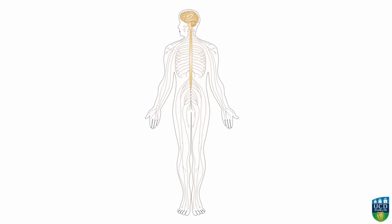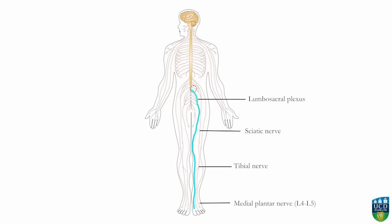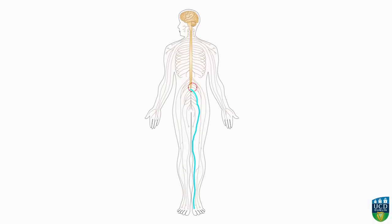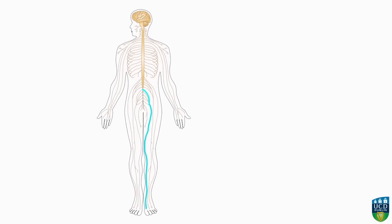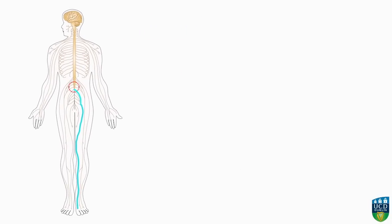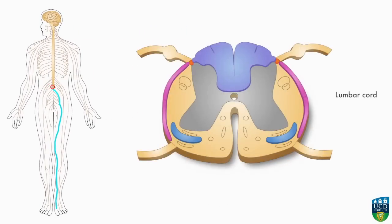The impulse travels via the first order neuron from the big toe through nerves in the leg to reach the spinal cord via the lumbosacral plexus. The first order neuron carries the impulse into the spinal cord via the dorsal root.